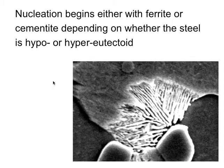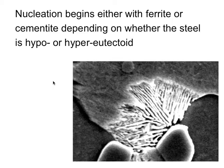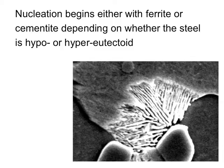We now have a two-phase mixture to deal with. Nucleation must involve both ferrite and cementite, because pearlite involves the cooperative growth of two phases at a common transformation front with the austenite. Even in the very early stages of transformation, both of these phases are growing together.